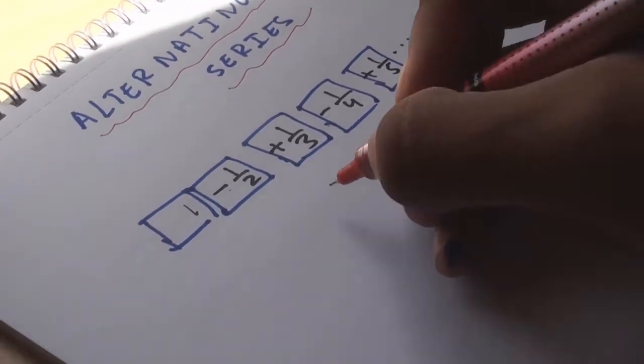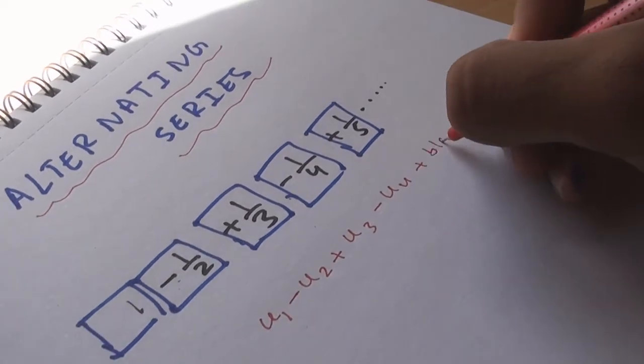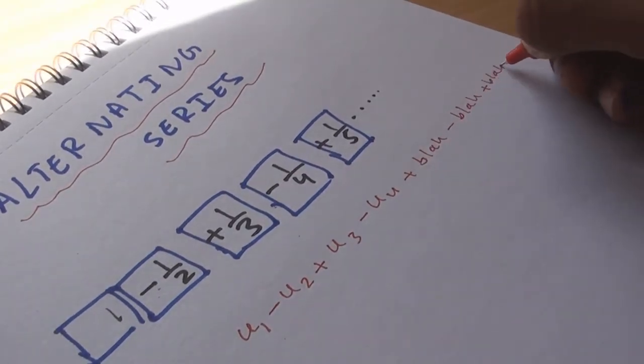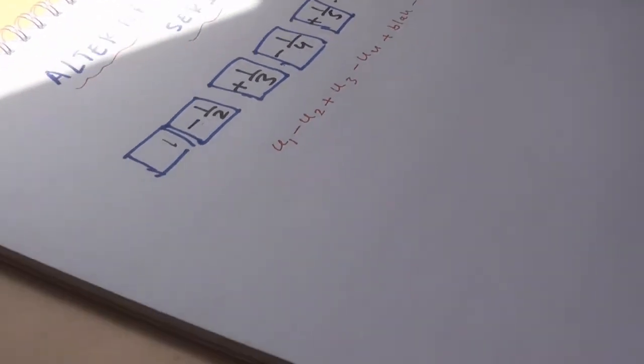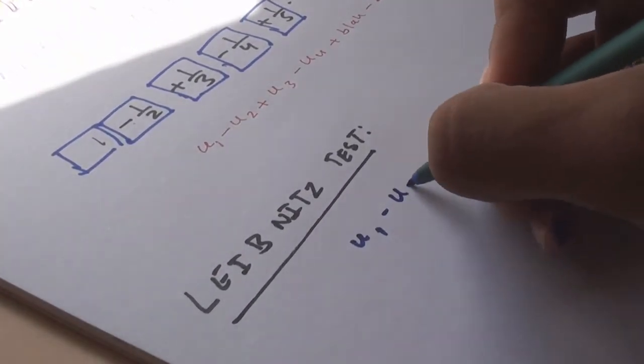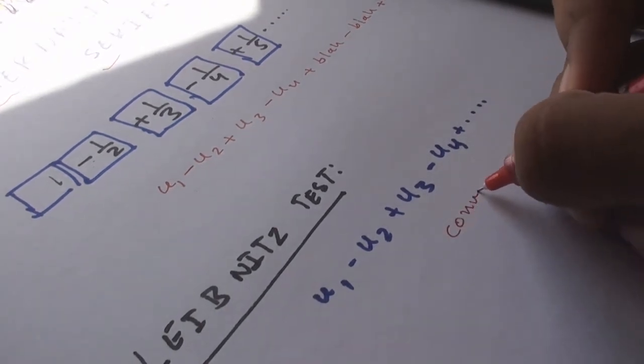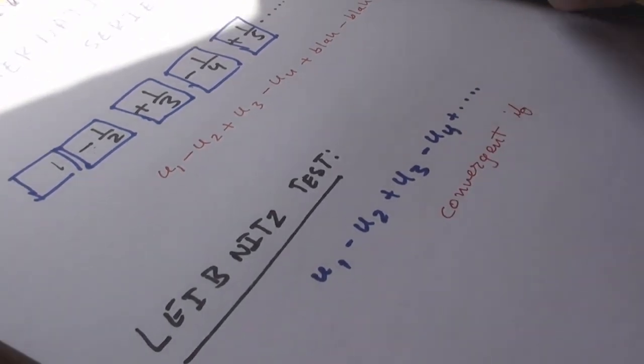The general form of the series is usually u1 - u2 + u3 - u4 + ... and so on. To find its convergence, we have the Leibniz test. The Leibniz test states that an alternating series u1 - u2 + u3 - u4 and so on is convergent if each term is numerically less than the preceding term.